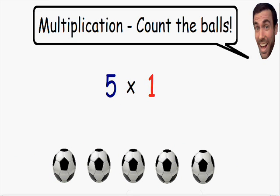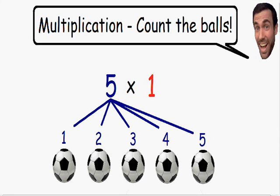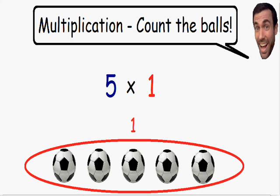Let's go over another example. Here we have 5 times 1, which means 5 is being multiplied by 1. So let's solve this by counting the soccer balls. We're starting with the number 5, which is why we have 5 soccer balls. And these 5 balls are being multiplied by 1. Notice how we already have 1 set of balls — we have already multiplied them by 1.